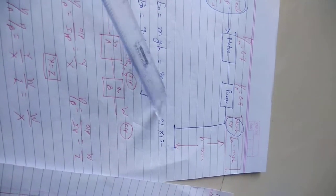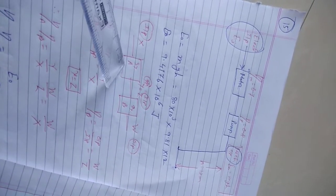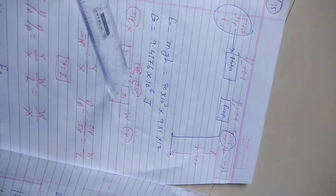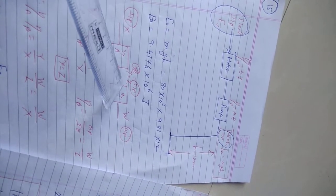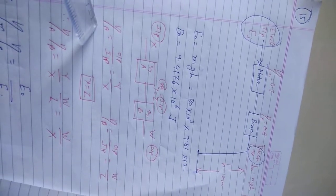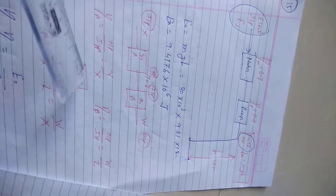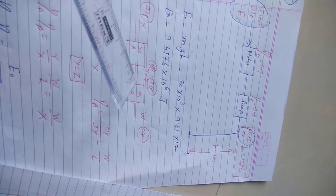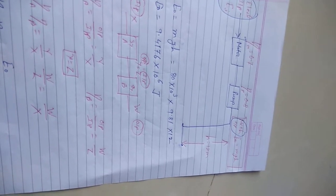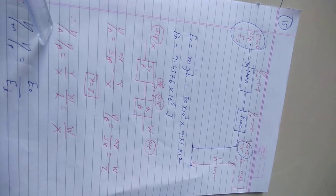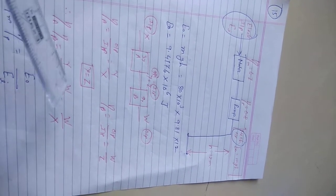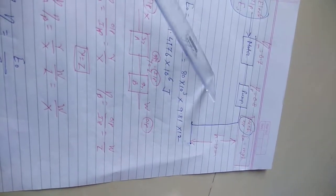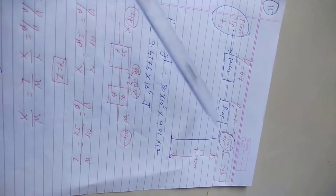For a cascade system, the output of the first system is the input to the second. If efficiency of system A is y/x and efficiency of system B is w/z, and y equals z (output of first = input of second), then the product of efficiencies gives total output upon total input. Similarly, the product of motor efficiency and pump efficiency equals E0 divided by Ei.